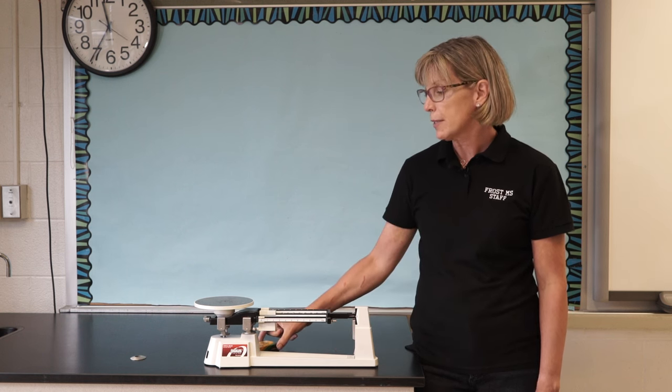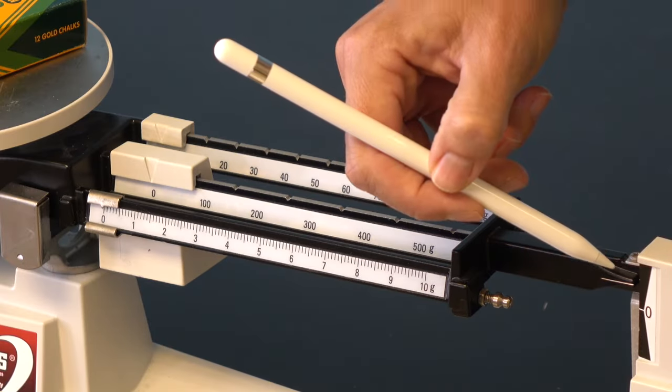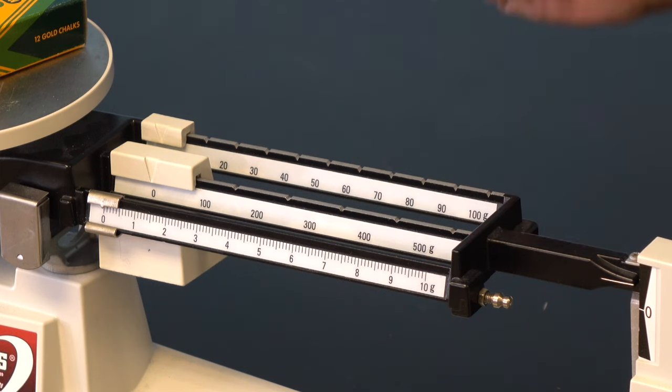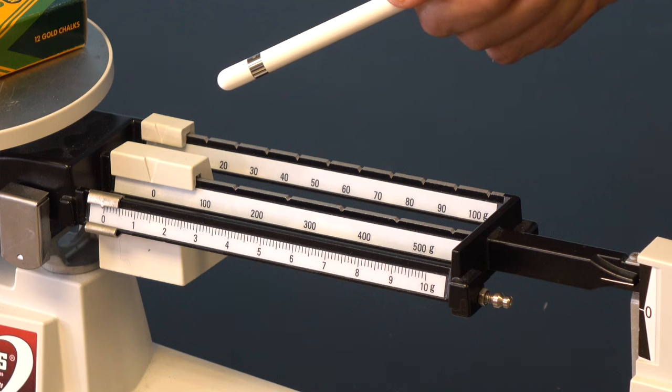Next, we place the object to be massed onto the pan. You'll notice that the pointer rises and goes above zero. That's because the mass on the pan is greater than the mass added together on all three beams with the riders in this position.